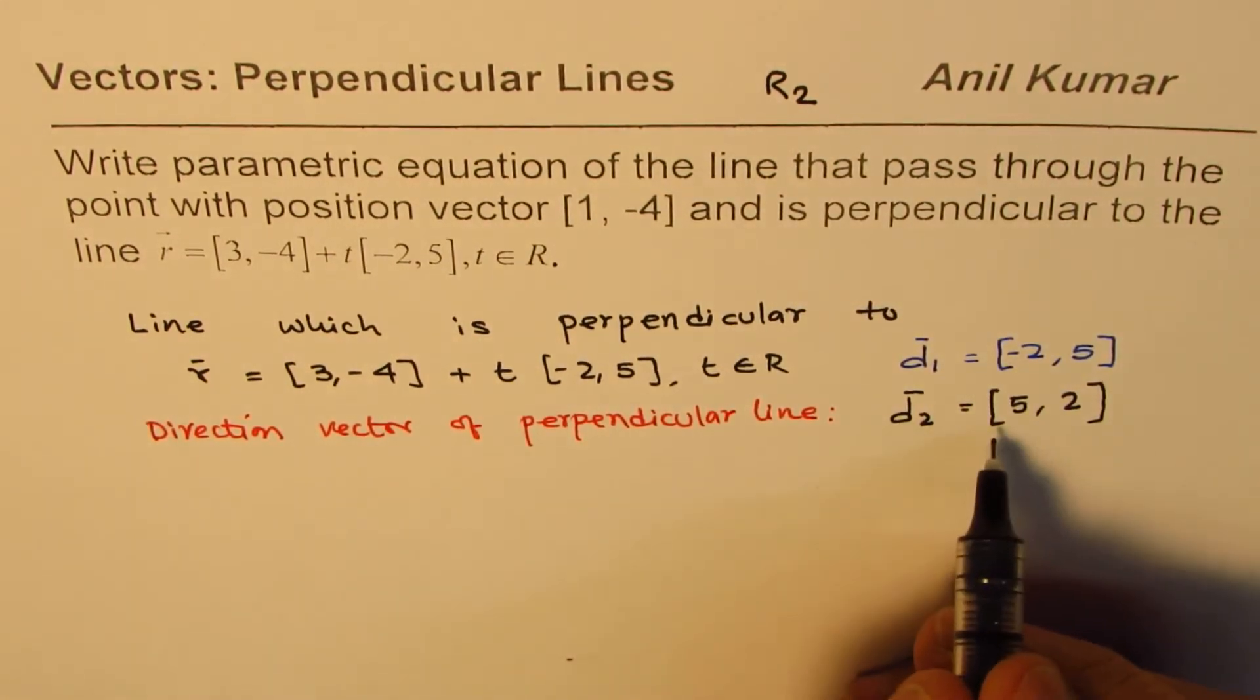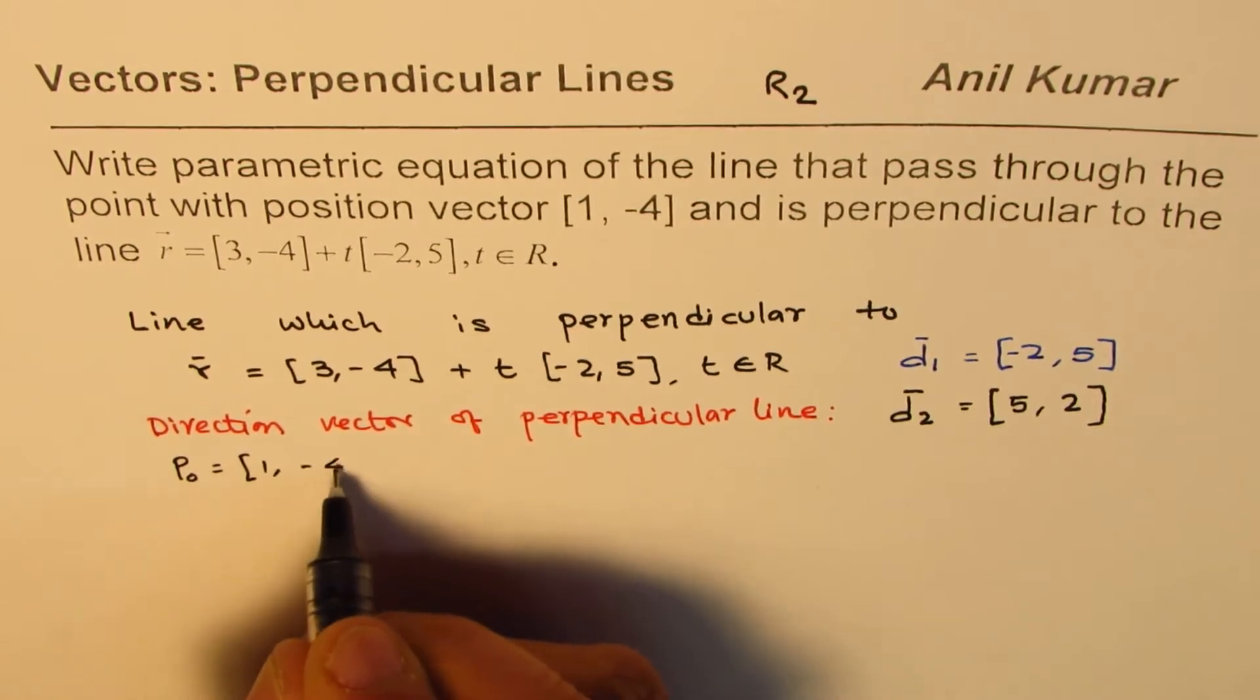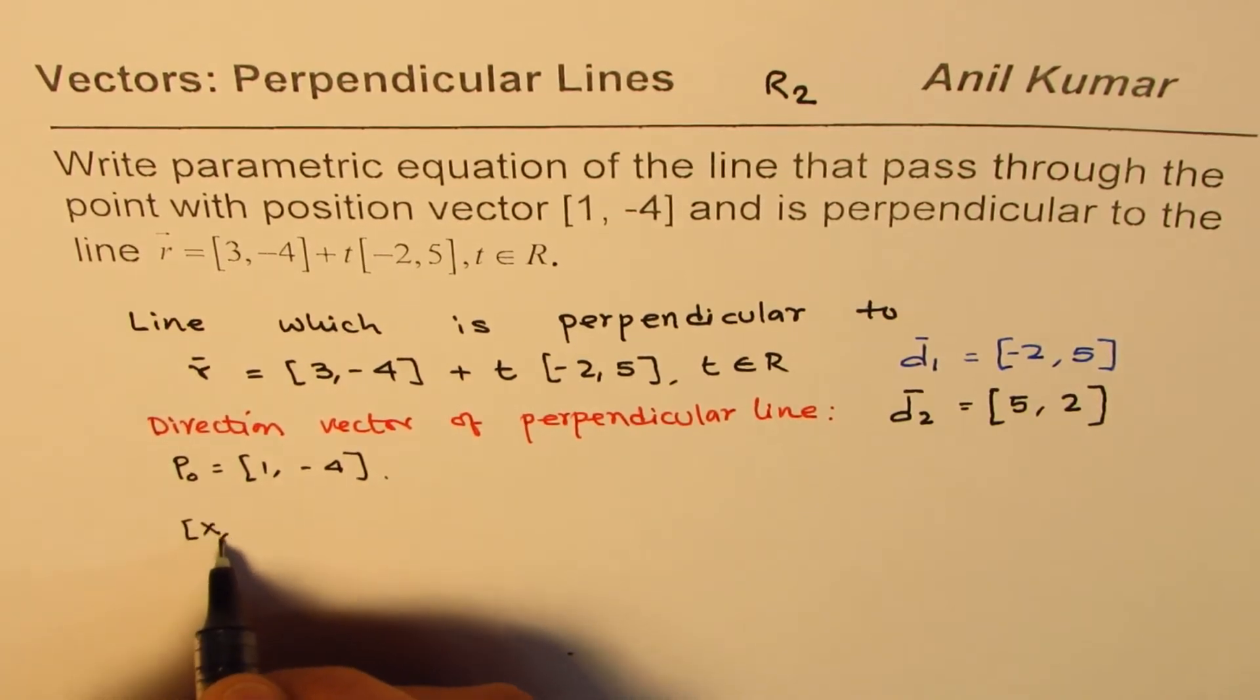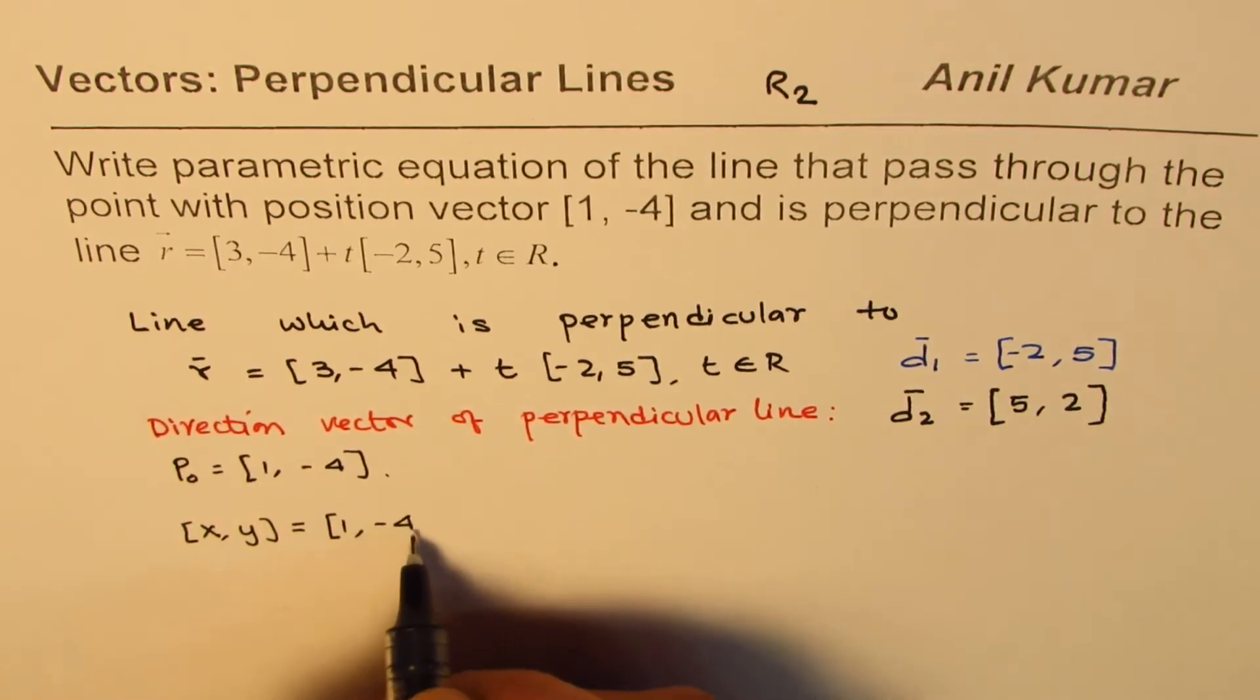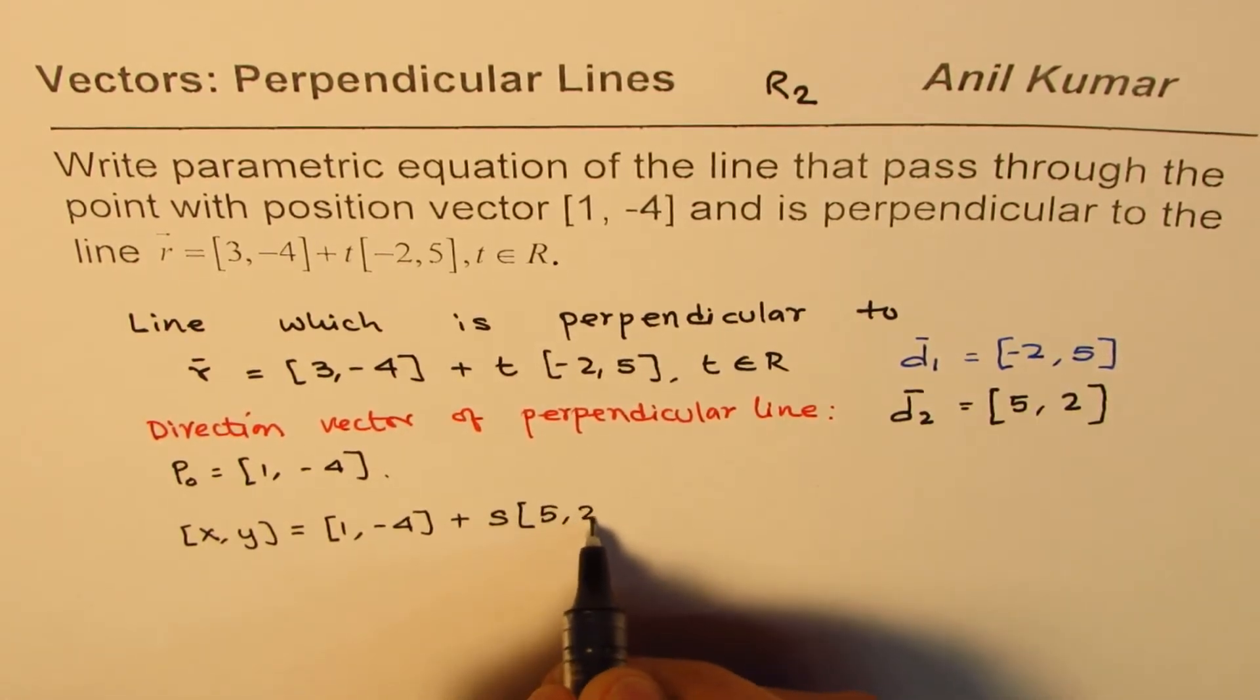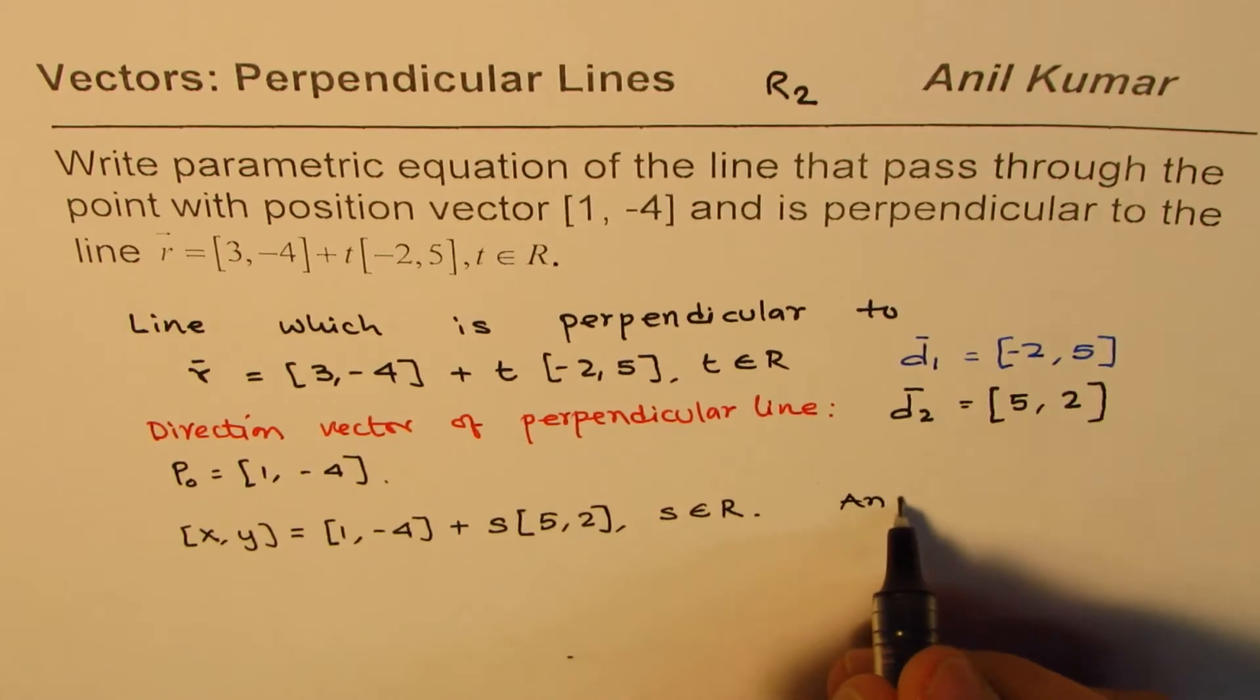Once you know this direction vector, you know the position vector is given to you. So position vector given to us is [1, -4]. And therefore, we can write down the equation of perpendicular line, which in vector form, we can write (x, y) = [1, -4] + s[5, 2], where s belongs to set of real numbers. So that is how we get our answer. This is our answer.